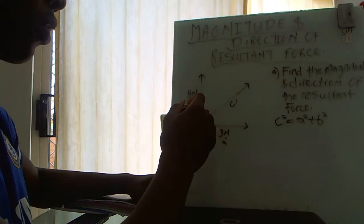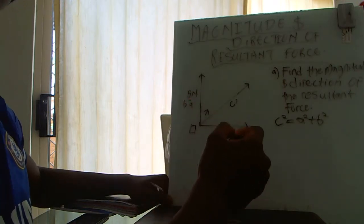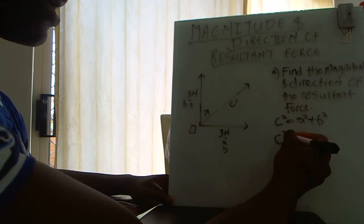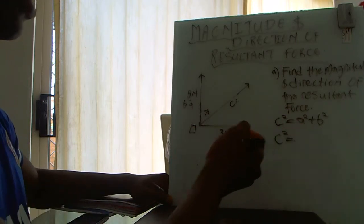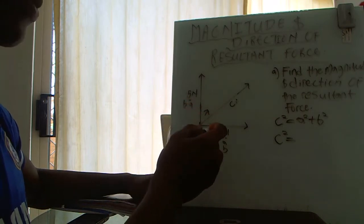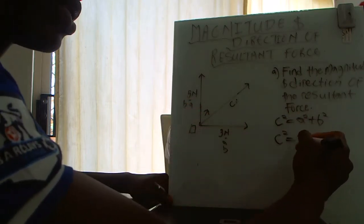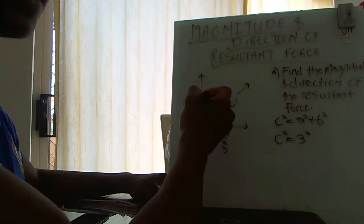You could name this a or b, it doesn't really matter. So c squared equals, I'll use this as a and this as b. Our a is three newtons, so we'll put three squared,